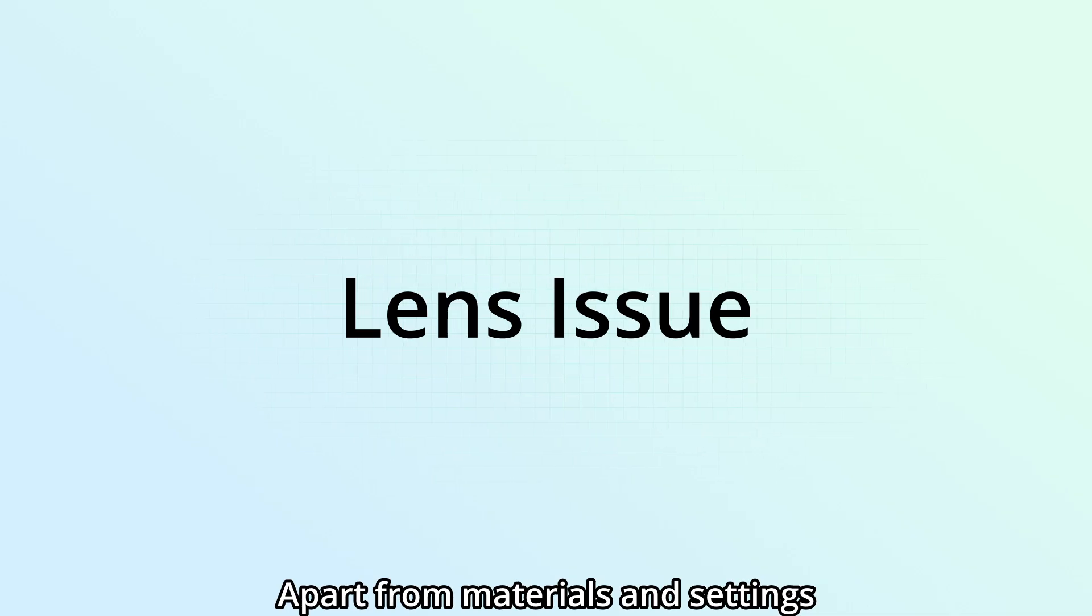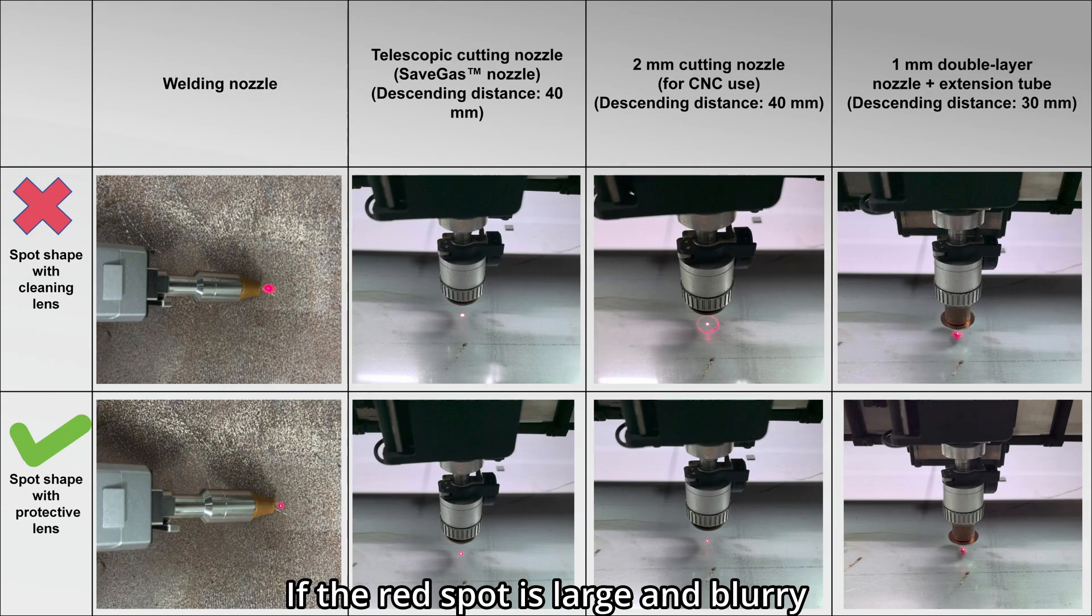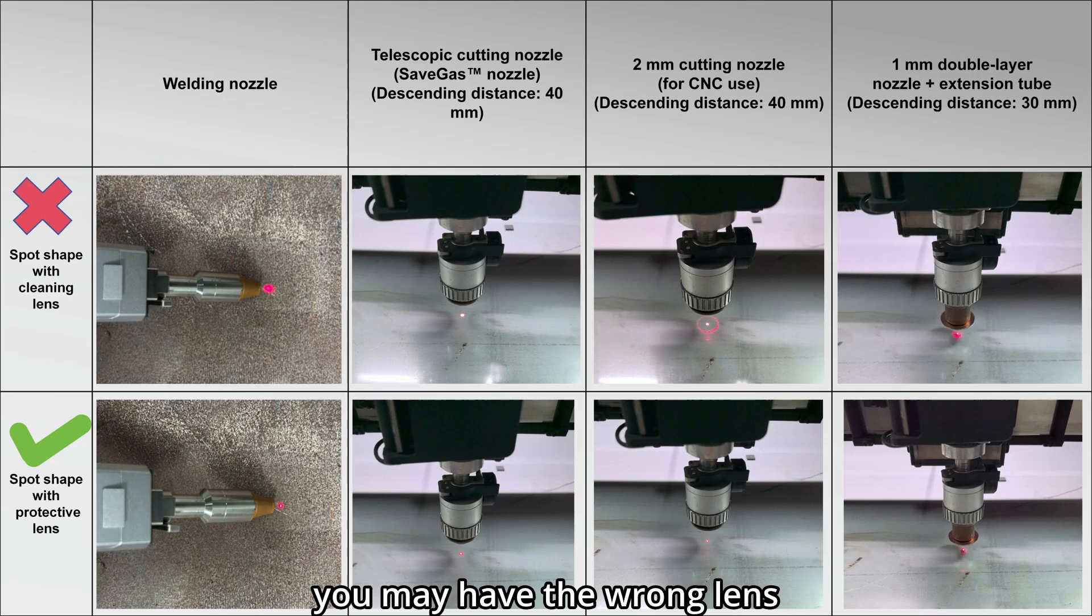Apart from materials and settings, lens can be the reason for incomplete cutting. If the red spot is large and blurry, you may have the wrong lens.